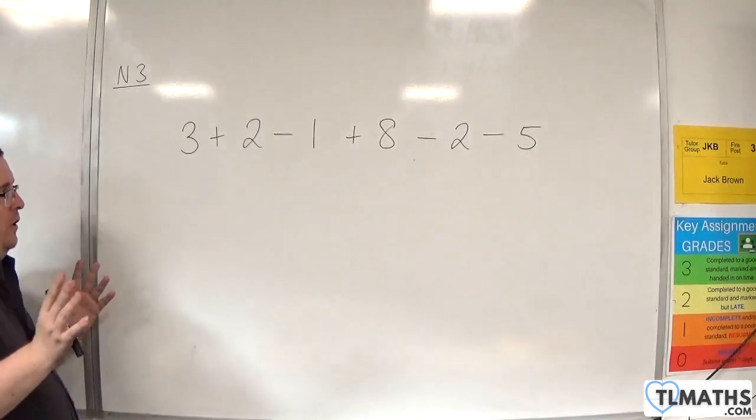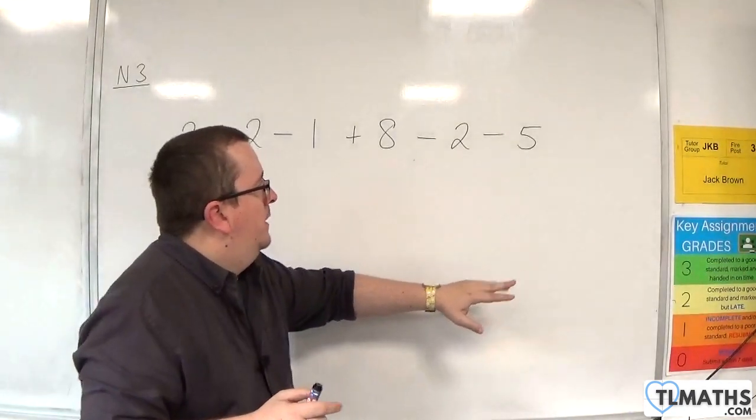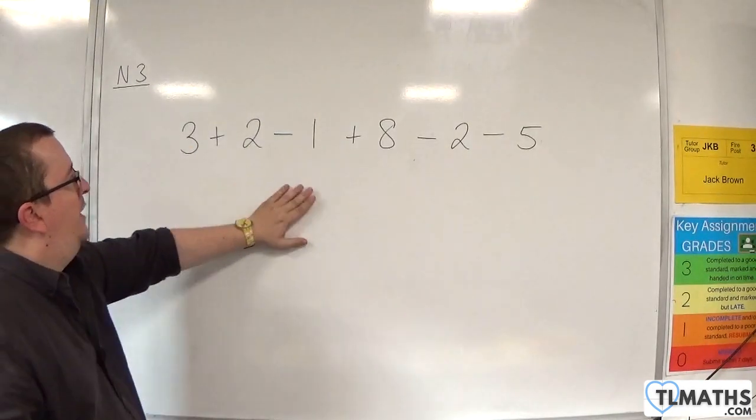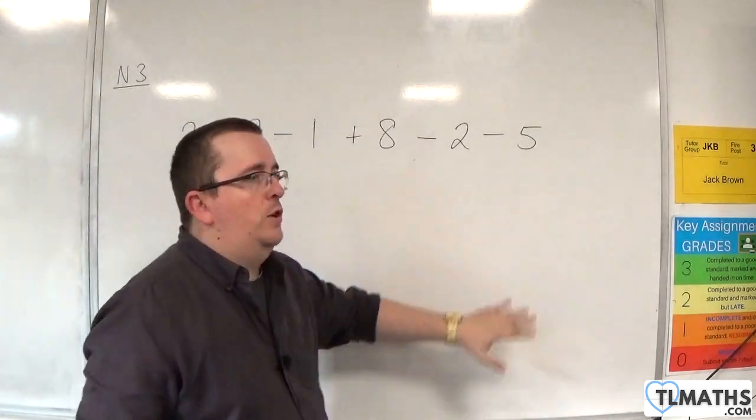So we've just got addition and subtraction. And we've got 3 plus 2, take away 1, plus 8, take away 2, take away 5.